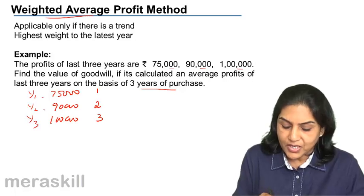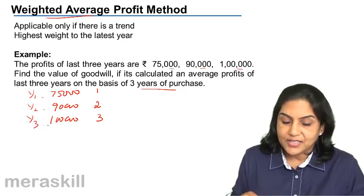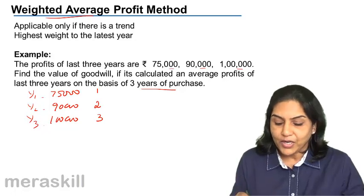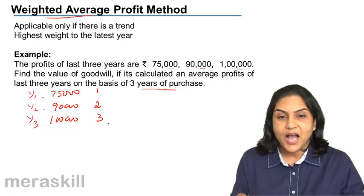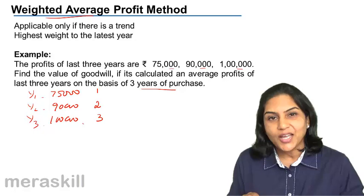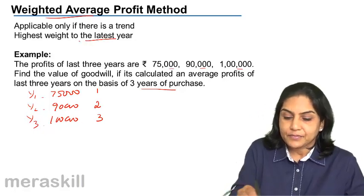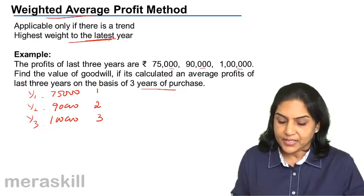This is the oldest year, this is the next year, this is the latest year. So if we give weights as one, two, and three, three is the highest weight being given to the latest year. Highest weight to the latest year.